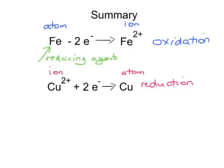What's caused our Fe atom to become oxidized to an Fe 2+ ion? The reaction with the copper 2+ ion. That must mean, therefore, our copper 2+ ion is our oxidizing agent.